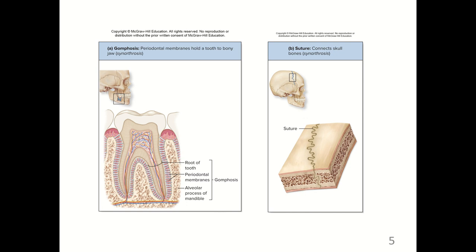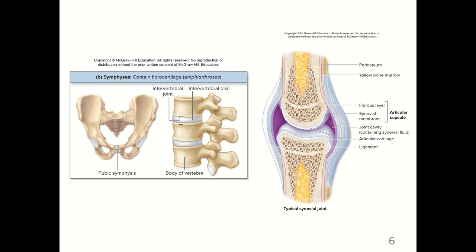A gomphosis is shown in figure A. The periodontal membranes hold the tooth to the bony jaw, and the tooth is not supposed to move, so this is a synarthrosis. Sutures, featured in figure B, are also immovable, connecting the bones of the skull. The amphiarthroses are slightly movable fibrocartilaginous joints; the pubic symphysis is featured between the two pubic bones, and the intervertebral discs are featured between the bodies of the vertebrae. Featured to the right is a synovial joint with a cavity containing synovial fluid. We'll talk mostly about synovial joints in today's lecture.